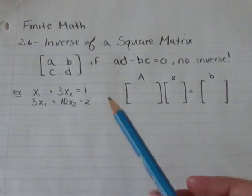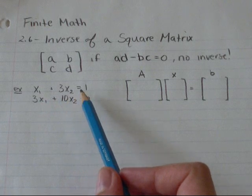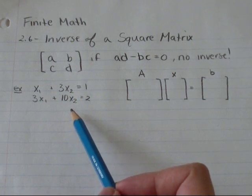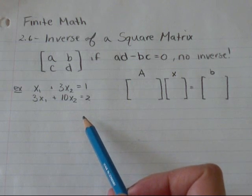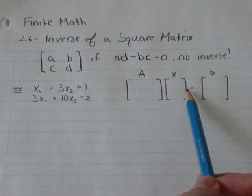So I'm going to do this example. I've got x1 plus 3x2 equals 1, and 3x1 plus 10x2 equals 2. And the first thing I'm going to do is write it in the form ax equals b.